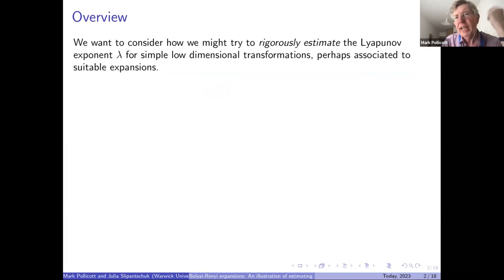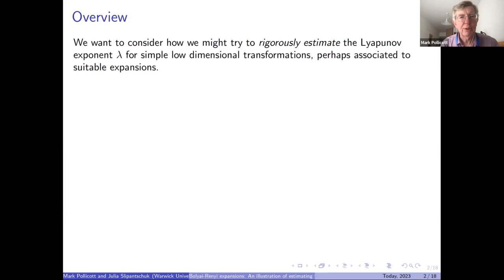The aim in general is to try to get some rigorous estimates on a number. This number is the Lyapunov exponent associated to a simple dynamical system, which tells you something about how chaotic it is, how unstable it is, or something about it.